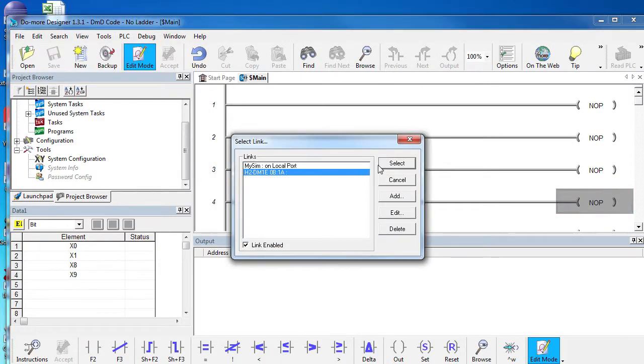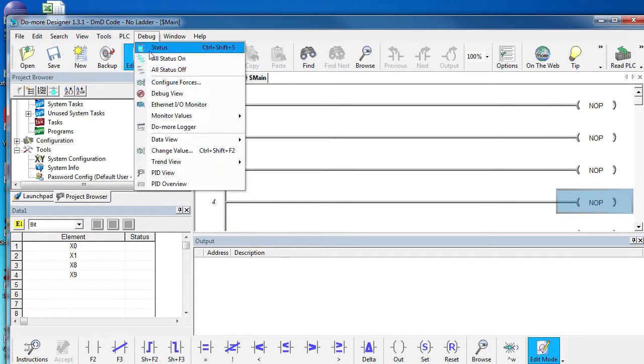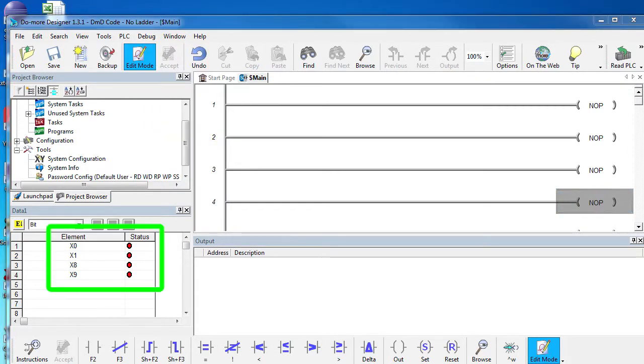If we bring up the Do-more Designer software and connect to the PLC, we can instantly see the results in the data view. When I pass a metal object in front of the inductive proximity sensors, we see the result. And when I wave my hand in front of the ultrasonic sensor, we see that result. Easy.